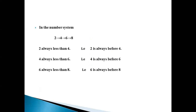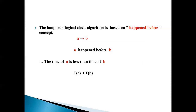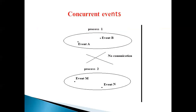In the number system, 2 < 4 < 6 < 8. So 2 is always before 4, and event 2 happened before event 4. The Lamport logical clock algorithm is based on the happened-before concept: A happened before B means the time of A is less than the time of B. Concurrent events: there are two processes, Process 1 and Process 2. Events A and B occur in Process 1, events M and N in Process 2. There is no message transferred between any events in the two processes, so these events are concurrent events.